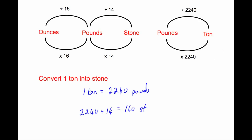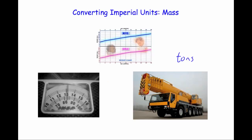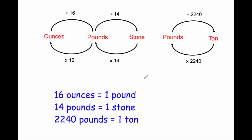This has been a video on converting between different imperial units for mass. The key facts to remember are: one pound is 16 ounces, one stone is 14 pounds, and one ton is 2,240 pounds.